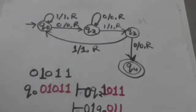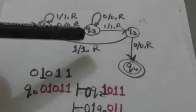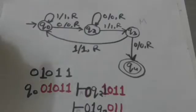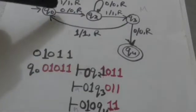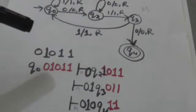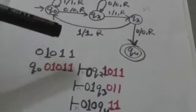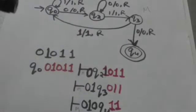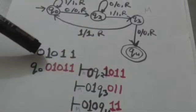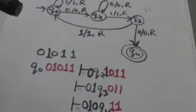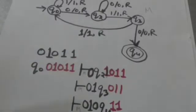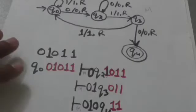This will be more clear after this example. Consider this Turing machine M — its initial state is Q0 and its final state is Q4. We have to check whether this Turing machine M accepts the string 01011 of input symbols or not.